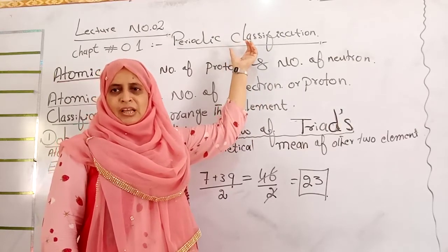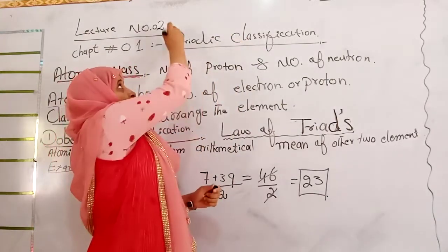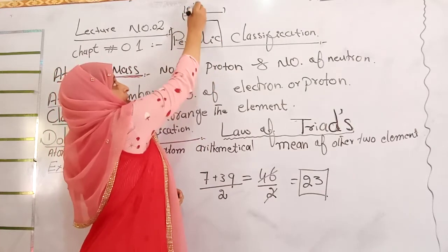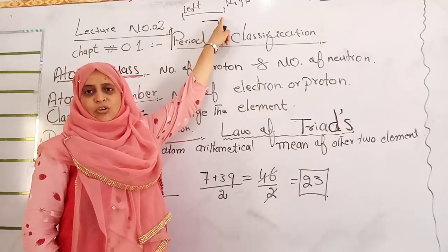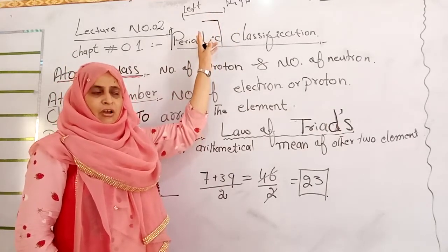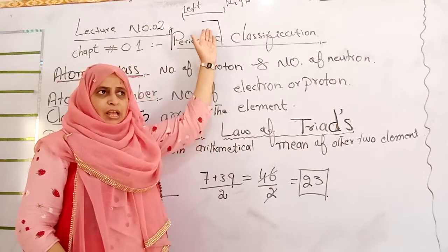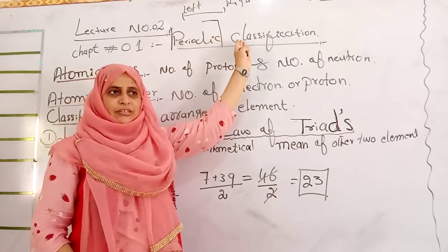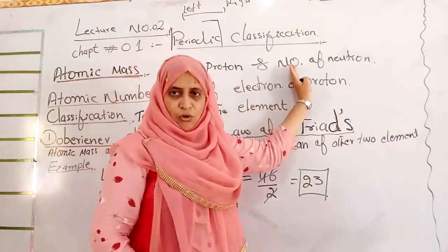Periodic means to form an element in a period. Period means to draw a line from left to right — that is the row. A horizontal row is called a period. To form a table on the basis of rows and columns: column goes up to down, while row goes left to right. Up to down is called group, and left to right is called period.